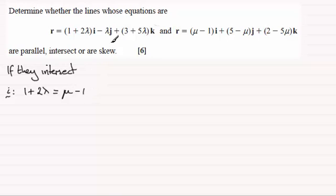Look at the j components next. We've got -λ here, -λ equals, and over here it's going to be 5 - μ. And finally the k components: we've got 3 + 5λ equals, and over here it's 2 - 5μ.